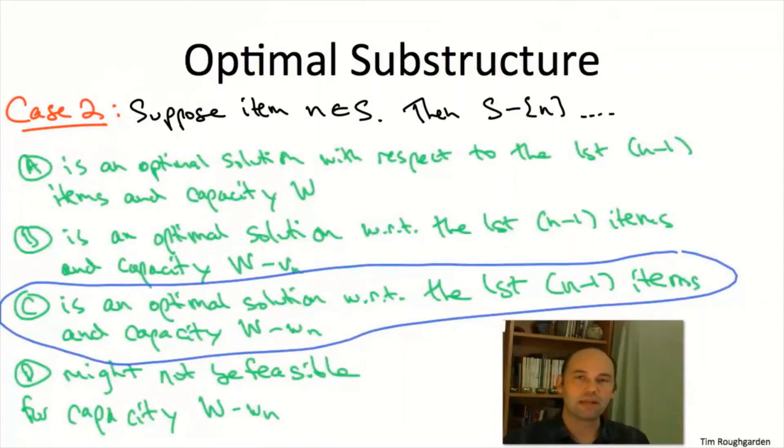Before I give you a quick proof, let me briefly explain why a couple of the other answers are not correct. First, answer B doesn't type check. Capital W is the knapsack capacity in units of size, and v_n is the item's value in dollars, so it doesn't make sense to talk about their difference. Part D: if you were worried about feasibility, if you take S and remove the nth item, you've taken a set whose size was at most W by feasibility of S, and removed an item with size w_n from it, so what remains has total size at most W minus w_n. So S minus n would indeed be feasible for this residual knapsack capacity.